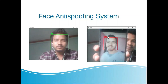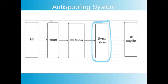The face anti-spoofing system comes into the picture just before the face recognition process, as shown in the figure. First, the staff faces the webcam, which captures their portrait face. A face detection algorithm is then applied, and those detected faces are forwarded to the liveness detection method. The liveness detection method checks whether the face comes from a real person, and if so, forwards it to the face recognition process.